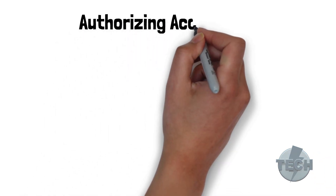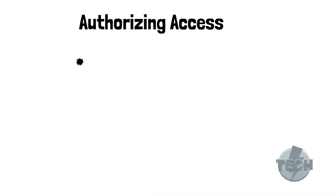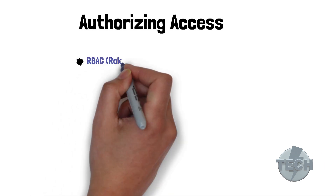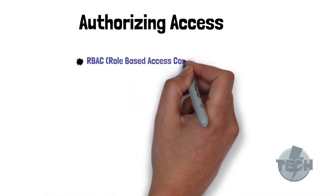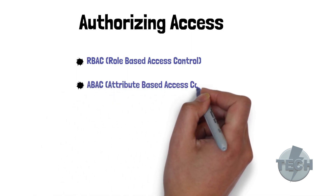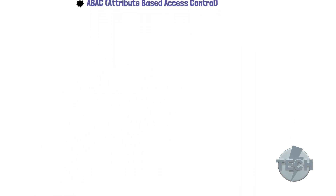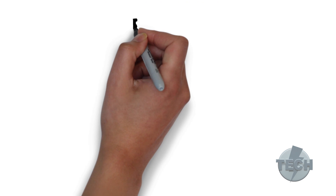We're going to look at two ways of authorizing access to resources in Azure. We have RBAC, which is role-based access control, and ABAC, attributes-based access control. We will do a quick review of RBAC and then dive into ABAC to see how these technologies play together.